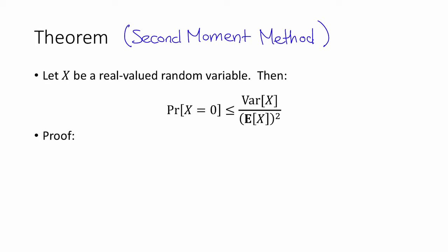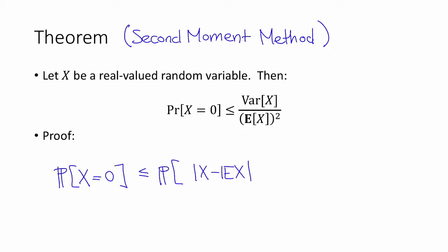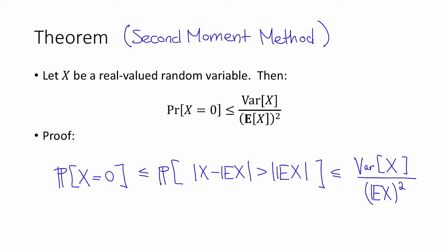The proof of this theorem is not hard — it's basically just Chebyshev's inequality. The probability that x is equal to 0 is at most the probability that |x minus its expectation| is greater than the expected value of x. And by Chebyshev's inequality, this is at most the variance of x divided by the expected value of x squared. So this proves the second-moment method.